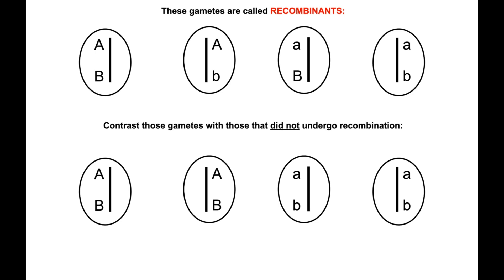But on the top, as a result of recombination, we have four totally different types of gametes.